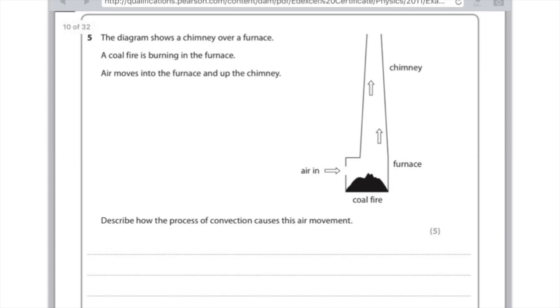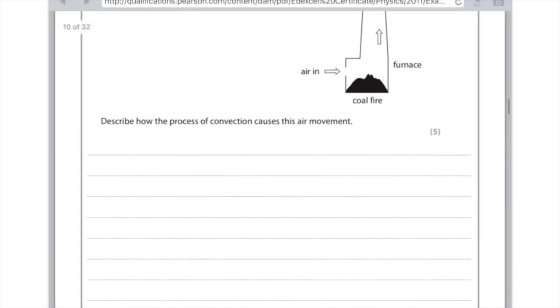Question 5. The diagram shows a chimney over a furnace. The coal fire is burning in the furnace. Air moves into the furnace and up the chimney. Describe how the process of convection causes this air movement. Five marks, definitely worth learning the perfect answer. First, the air is heated by the fire. Second, the air expands. Third, the air becomes less dense. Fourth, the hot air or less dense air rises. Fifth, cooler air from outside the furnace displaces the warm air and the cooler air falls, ensuring a convection current is set up.